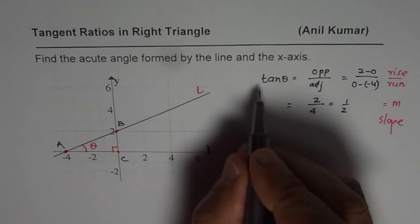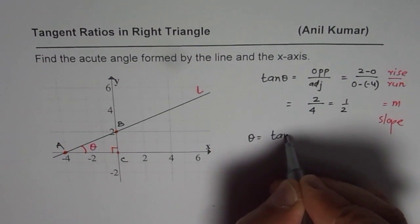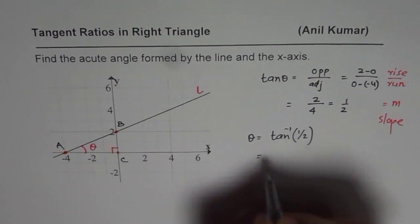Now, we will find the angle theta. So, tan theta is half for us. So, theta is equals to tan inverse of half. We can use calculator to find this answer.